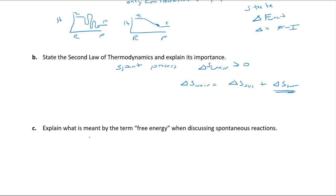Free energy refers to Gibbs free energy, ΔG. A negative ΔG means spontaneous; a positive ΔG means non-spontaneous. If a reaction is spontaneous, that magnitude of ΔG represents energy free to do useful work or drive other reactions. If ΔG is positive, the reaction won't occur on its own, but if you input that much energy you can force it to go — that's really important.